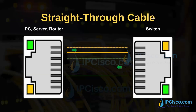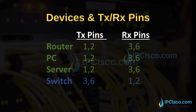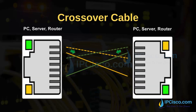When we connect different devices with copper cables, different devices need different port types: MDI or MDIX. The transmit and receive pins are in different order for MDI and MDIX. According to these types, we use different cable types to match the transmit and receive pins. One is a straight-through cable, used to connect different types of devices. The other is a crossover cable, used to connect similar devices, where the order of pins is different to match transmit and receive pins at both ends.